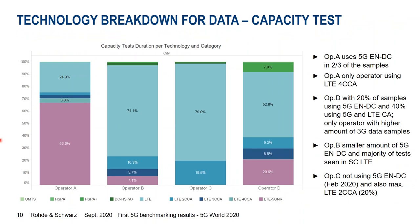Looking at the first capacity test results: Operator A uses two-thirds of all samples on 5G, with also a 4% portion using four-component carrier aggregation. Operator D uses 20% 5G samples and roughly 40% when combining 5G and LTE carrier aggregation samples, plus a significant 8% using 3G HSPA+. Operator B uses three-quarters of samples on LTE single carrier. Operator C has no 5G at all, as they had not launched 5G for commercial users in February 2020 — showing 80% single carrier and 20% carrier aggregation.